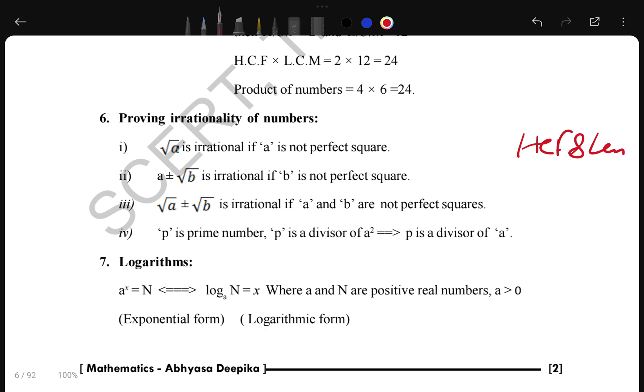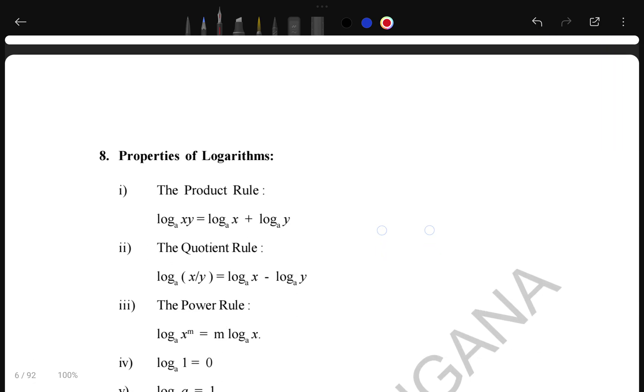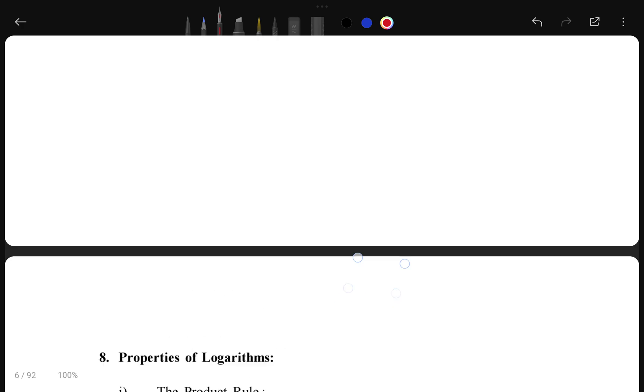Definitely I will tell one thing here - HCF and LCM, definitely the question will come. Improvement of irrational, definitely question will come from this, like 2 plus 3 root 5. Like that, something question we have to prove is irrational. This question will definitely come and these questions totally cover the 10 marks from this chapter.